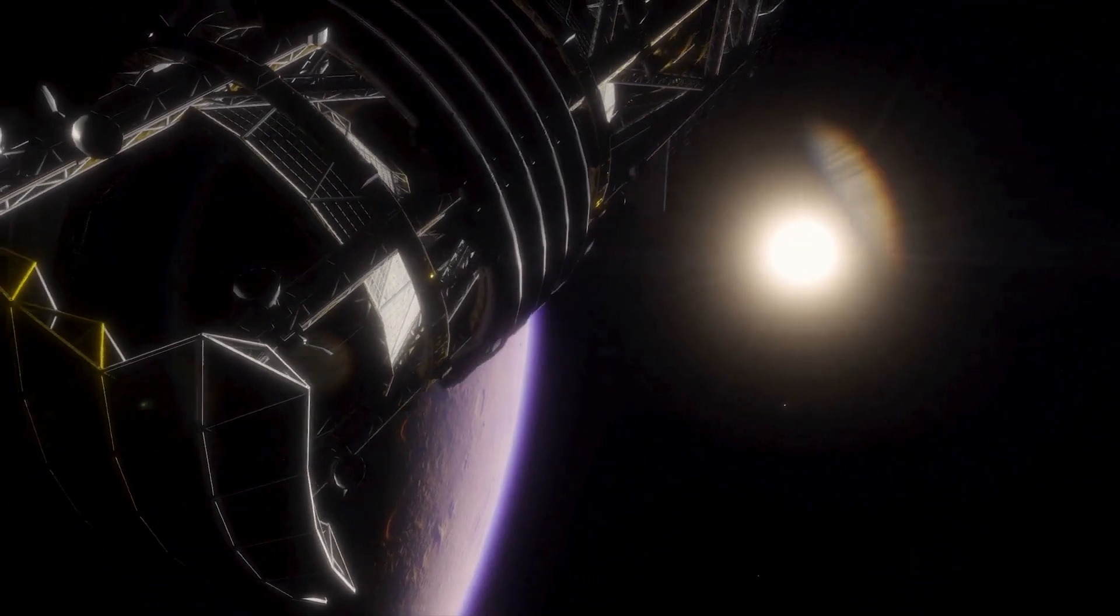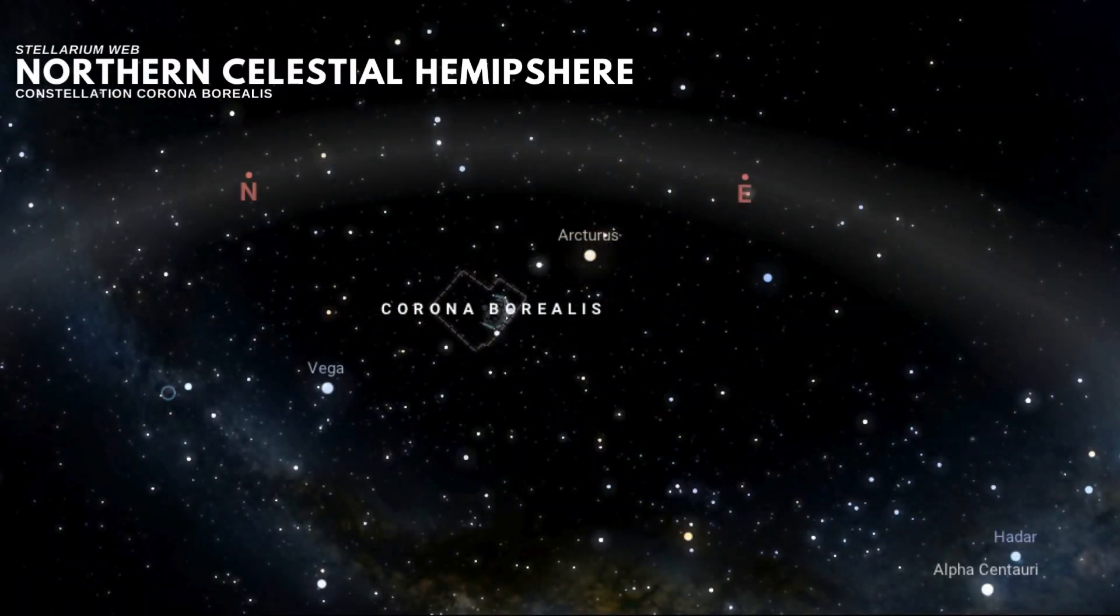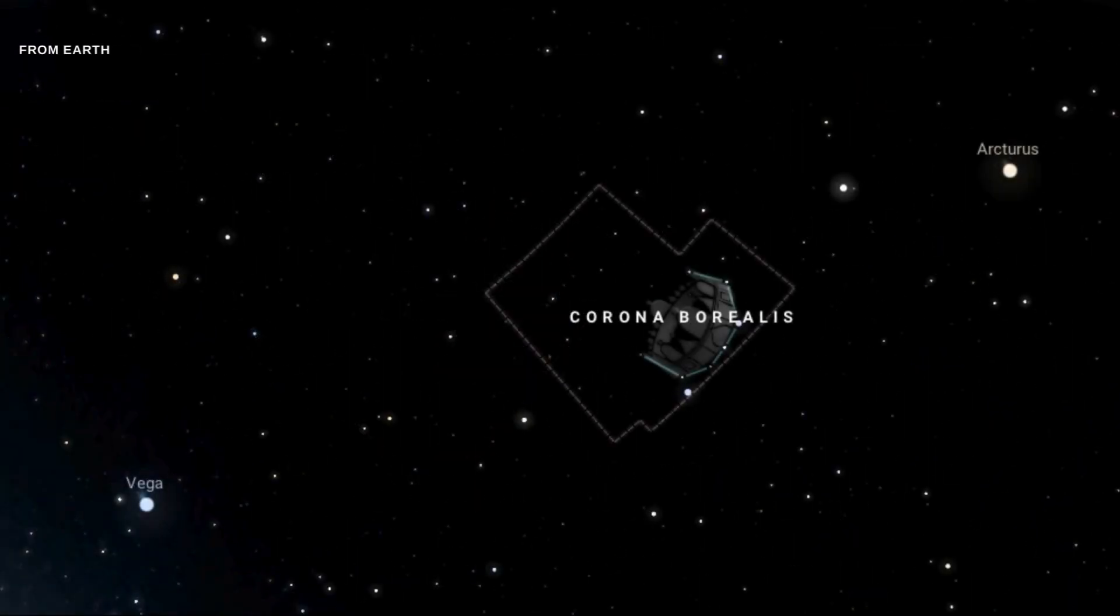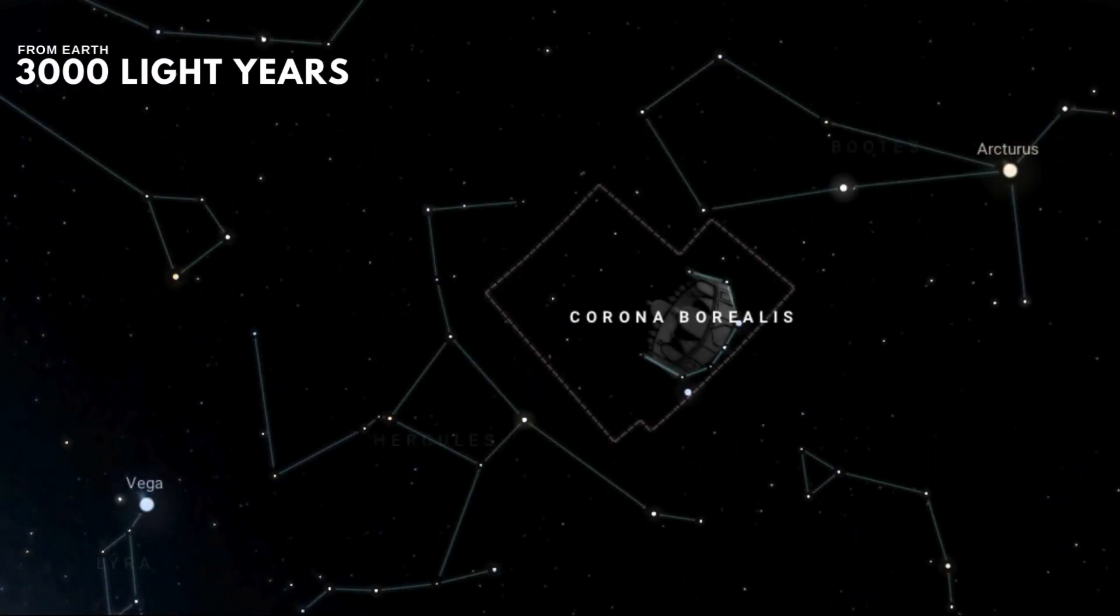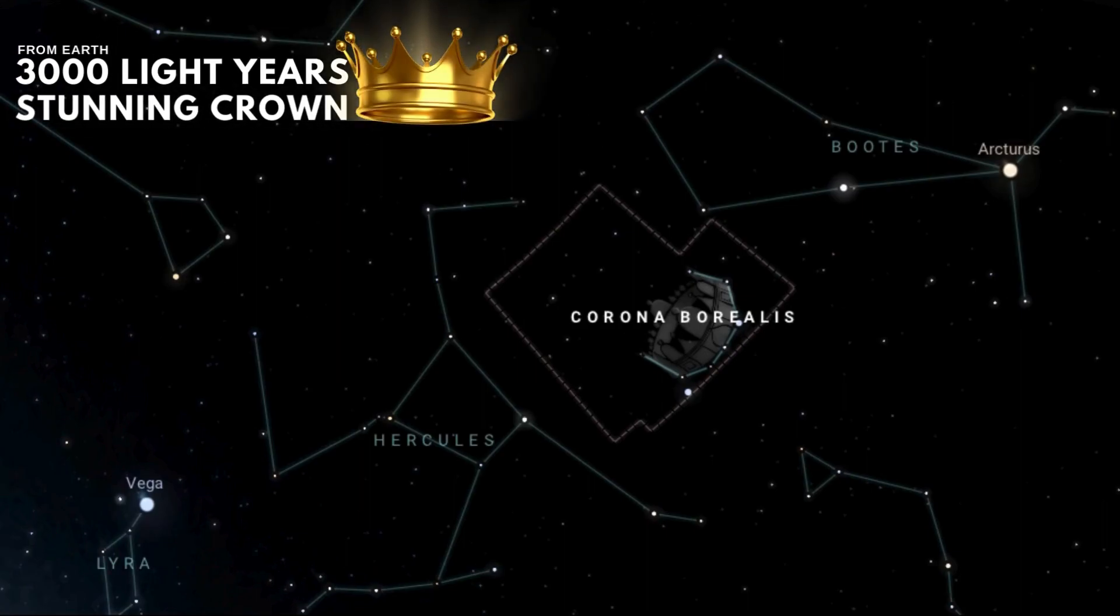Let's take a cosmic journey. Our destination? The Northern Celestial Hemisphere, where the constellation Corona Borealis awaits. This little jewel of the sky, spanning 3,000 light-years away, sits snugly between constellation Boötes and Hercules. From Earth, Corona Borealis looks like a stunning crown.